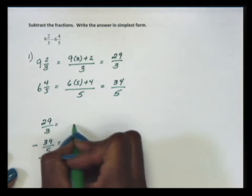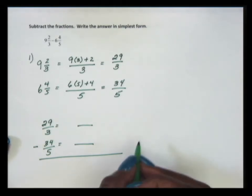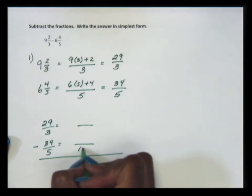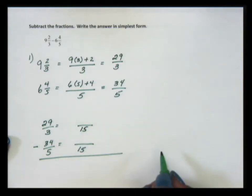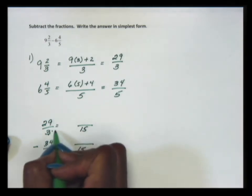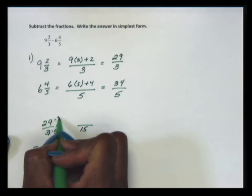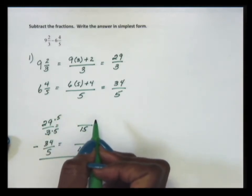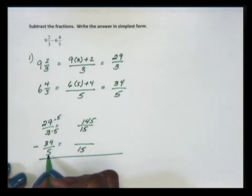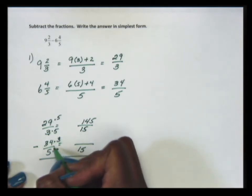The next thing we'll do is find the least common denominator. The least common denominator is the smallest number that both 3 and 5 will divide into. For 3 and 5, the least common denominator is 15. We need to think about what times 3 gives us 15 — that's 5. Whatever I multiply my denominator by, I multiply the numerator by the exact same number. 29 times 5 is 145. Since 5 times 3 is 15, I'll also multiply 34 times 3, which is 102.